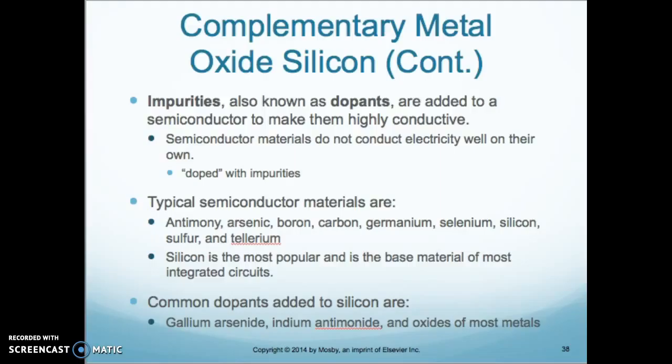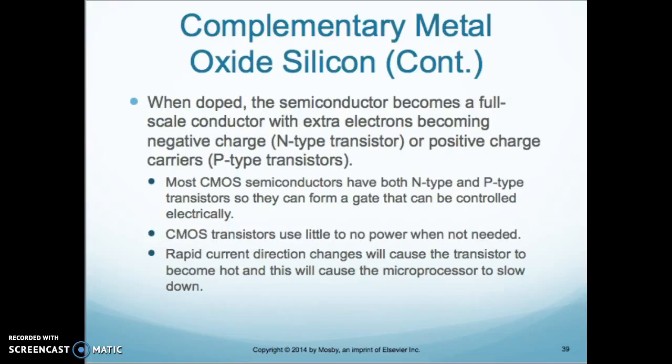Common dopants added to silicon are gallium arsenide, indium, antimony, antimide, and oxides of most metals. When doped, the semiconductor becomes a full-scale conductor, with extra electrons becoming either negative charge carriers.